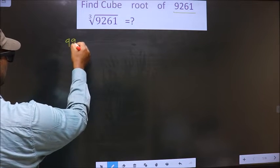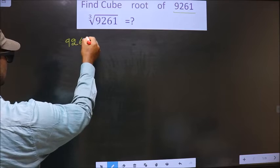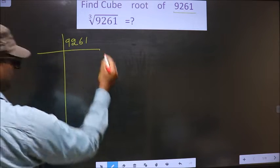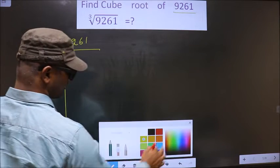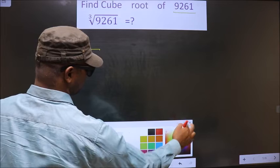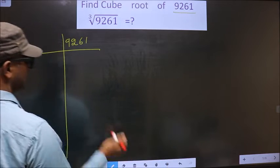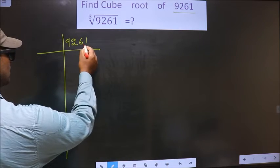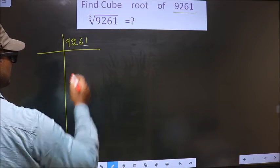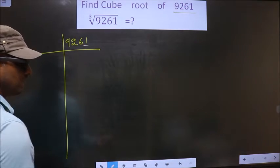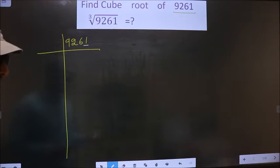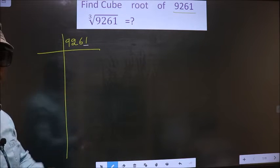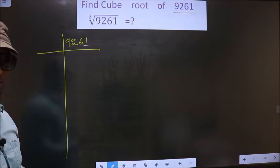For the number 9261, the last digit is 1, which is not even. So this is not divisible by 2.